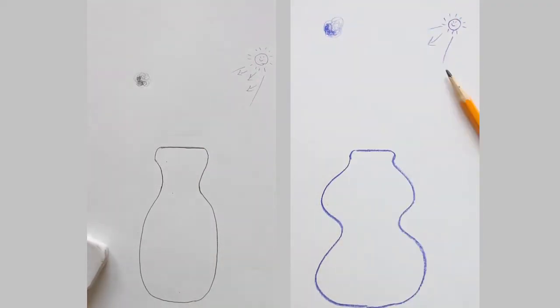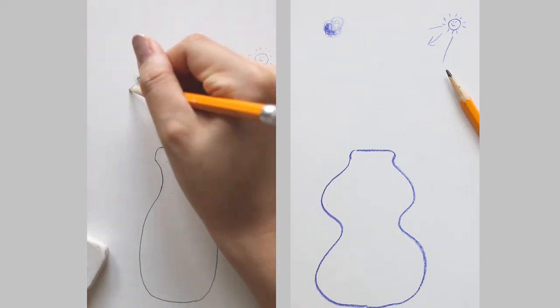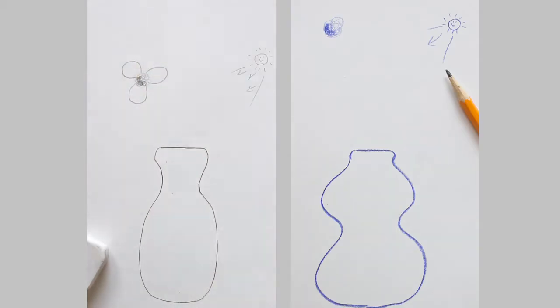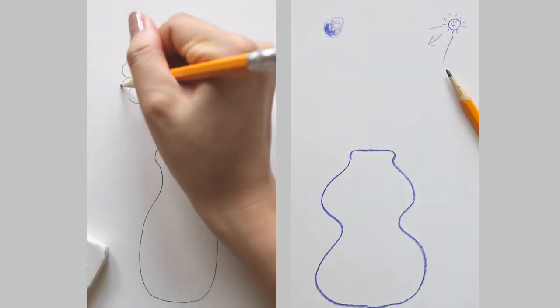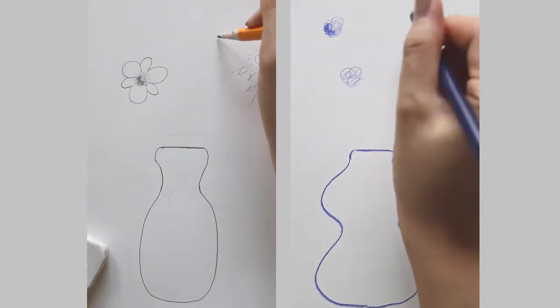Then add three large petals with some spacing in between each. Then add three more smaller petals in between the large ones. Now do the same things twice more.